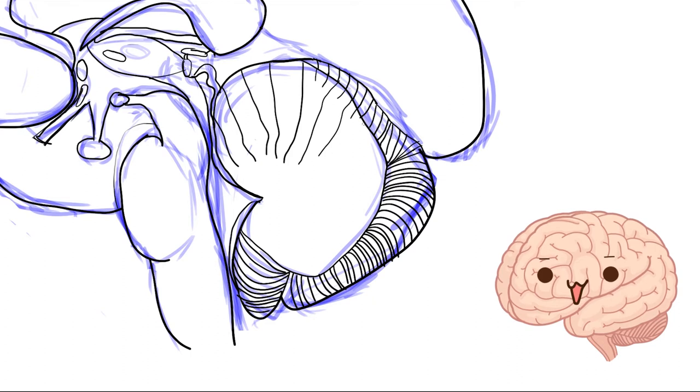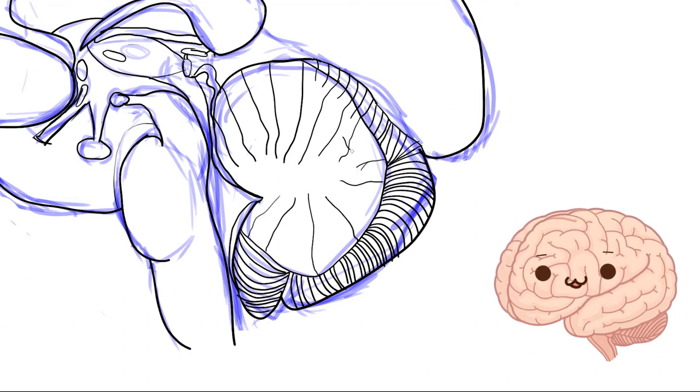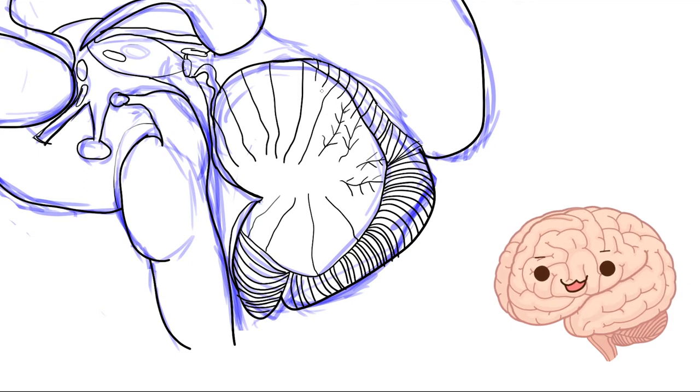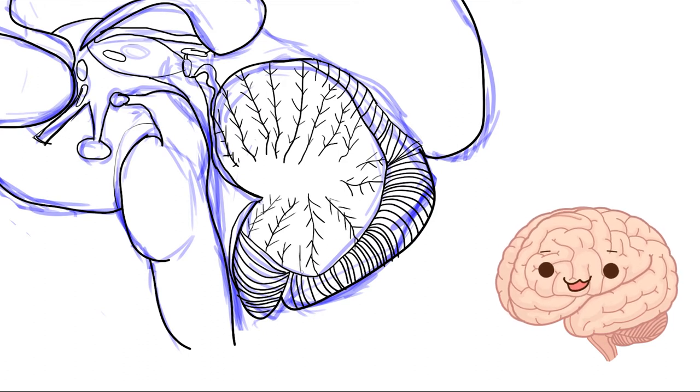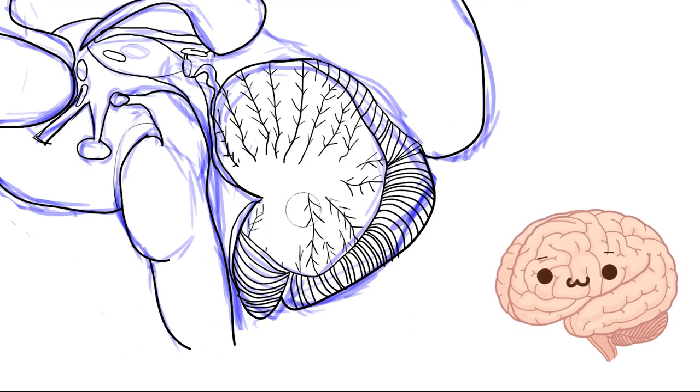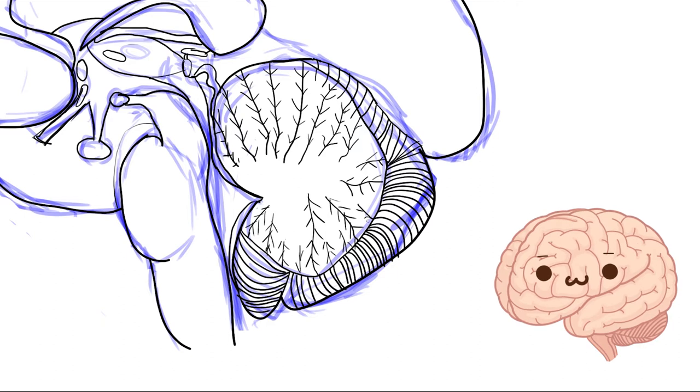I'm connected to the spinal cord, brainstem, and cerebral hemispheres by three major fiber tracts, cerebellar peduncles, which bring in information to me in afferent fashion or away from me in efferent fashion.